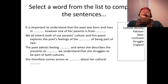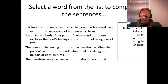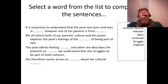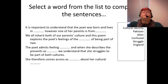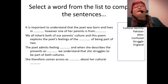You've got a fill-in-the-blanks activity with a word box on the right-hand side containing: half English, cultural identity, Pakistan, alien, confused, struggle, and England. I'm going to read the paragraph and you need to write out which word goes where. 'It's important to understand that the poet was born and lives in [blank], however one of her parents is from [blank]. This poem explores the poet's feelings of being part of two [blank]. The poet admits feeling [blank] and when she describes the presents, we understand she struggles to be part of both cultures.' Pause the video and do that task now.